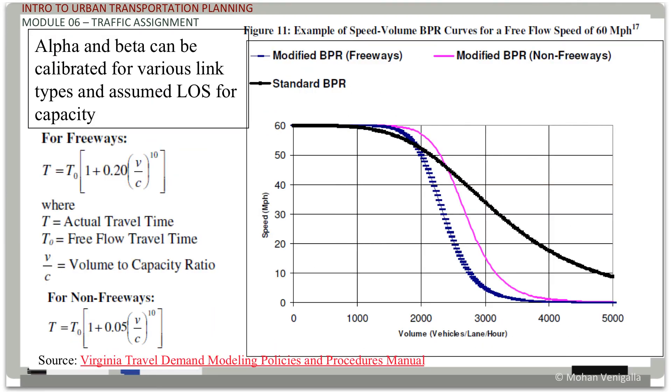So now here is another fancy link performance function. Oh, that's another name too. Travel time to v/c relationship is also called link performance function. So you might want to note that somewhere. Link performance function. This is used by Virginia travel demand modeling policies and procedures manual.